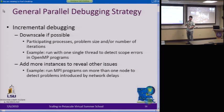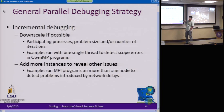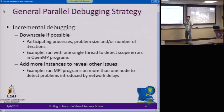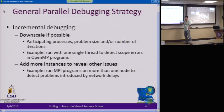One way to tell which case it is, is to run your OpenMP program with a single thread. If it's a race condition, with one thread it wouldn't happen. But if it is a variable scope error, then even with one thread you'll still get the error.